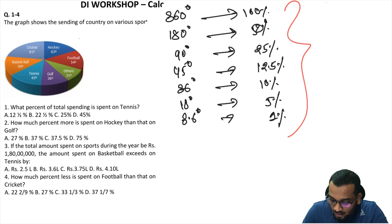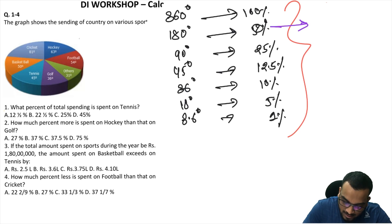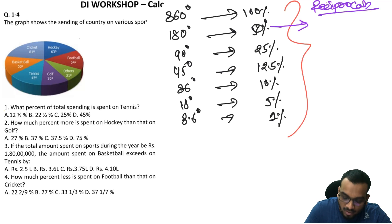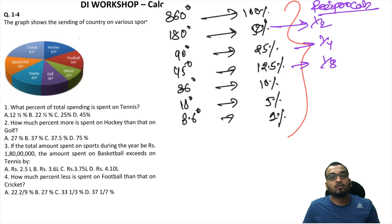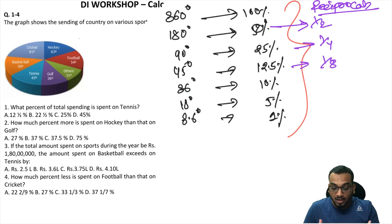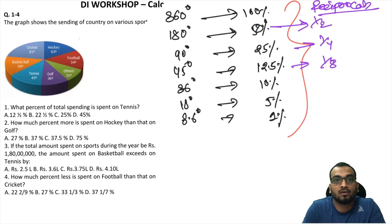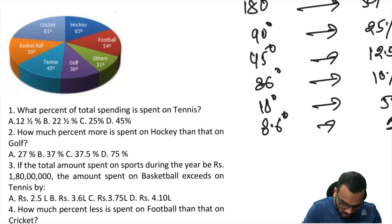You can also see a reciprocal pattern here. This is 1/2, this is 1/4, this is 1/8, and so on. If the degree values match these reciprocal types and the options are given in reciprocal form, you can solve it very quickly. Now let's go ahead with the pie chart and do question number 1.